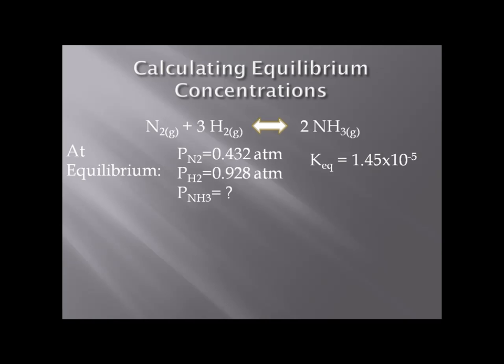The way we solve this, we're going to use the equilibrium constant expression. K_eq is equal to the partial pressure of ammonia squared, because of this 2 up here, over the partial pressure of nitrogen times the partial pressure of hydrogen, and that's cubed due to the 3 that's in the equation up there.